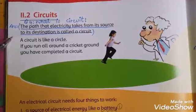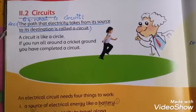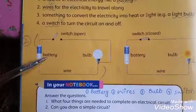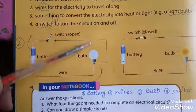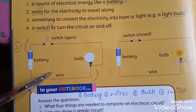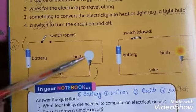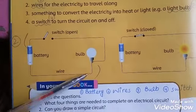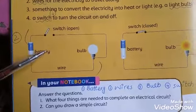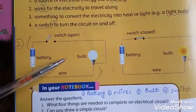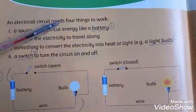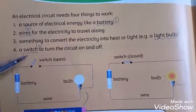Page 52, next topic: Circuits. The path that electricity makes from a source to its destination is called a circuit. Through these circuits, we can get electricity in our homes. A circuit is just like a circle — if you walk all around a circular path and return to the start, you have completed a circuit.